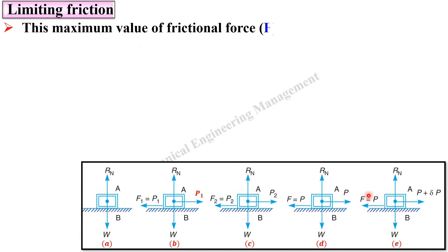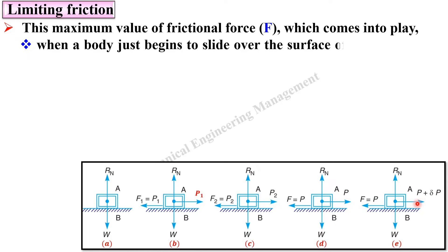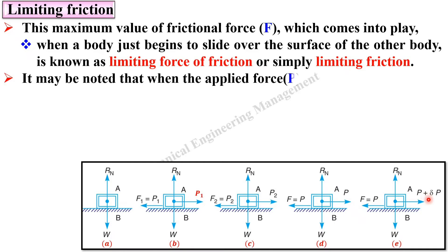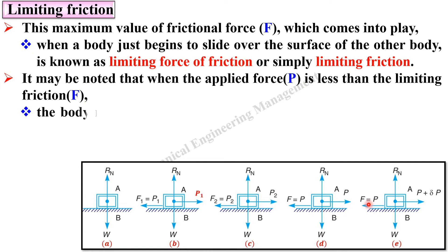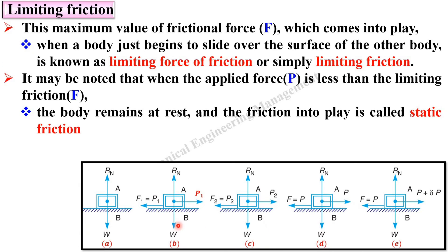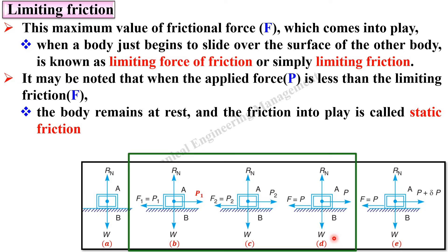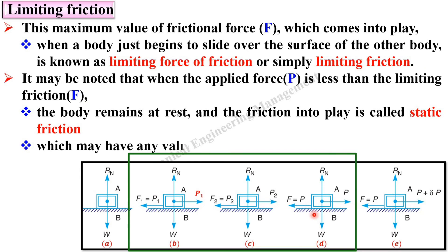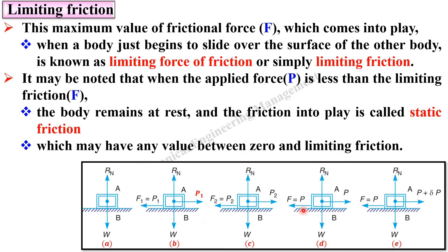This maximum value of the friction force F, which comes into play when a body just begins to slide over the surface of the other body, is known as limiting friction. It may be noted that when the applied force P is less than the limiting friction force F, the body remains at rest, as in figures B, C, and D. This friction is called static friction, which may have any value between zero and limiting friction.